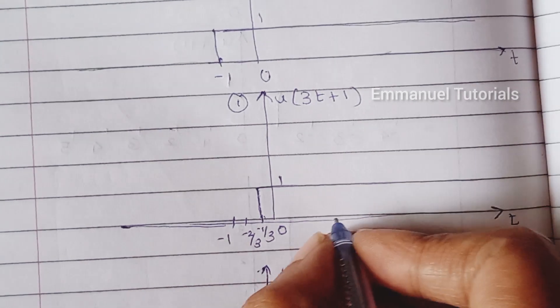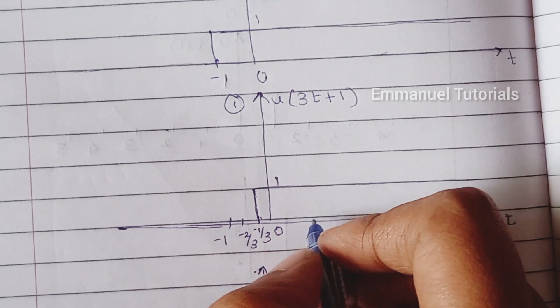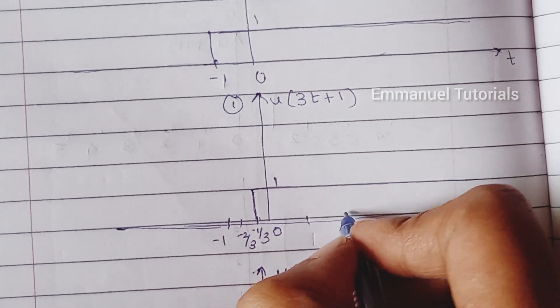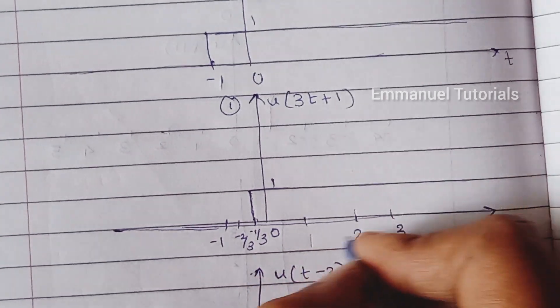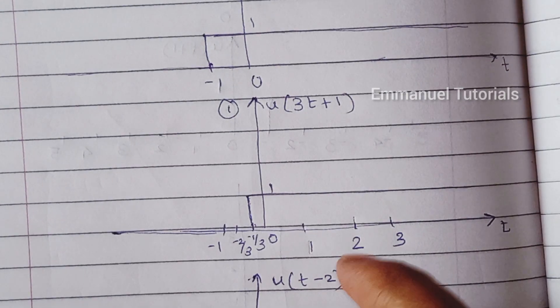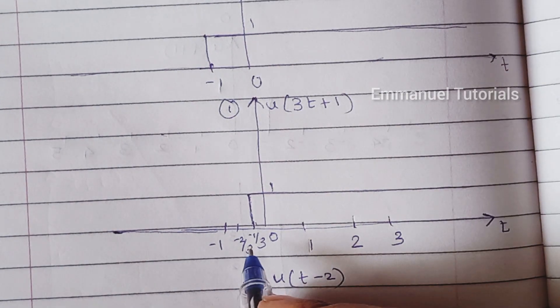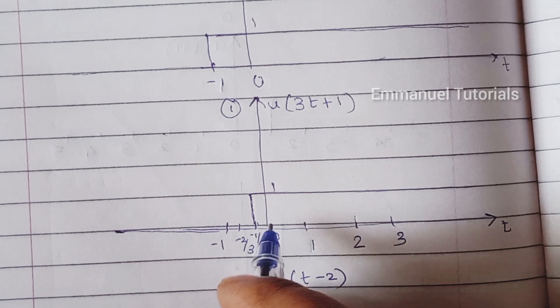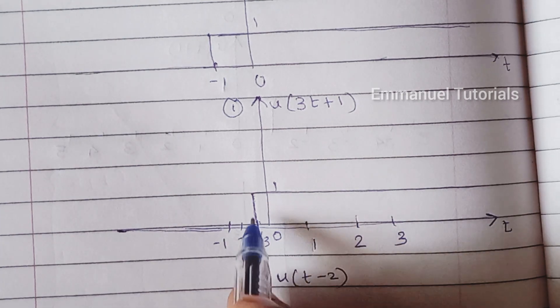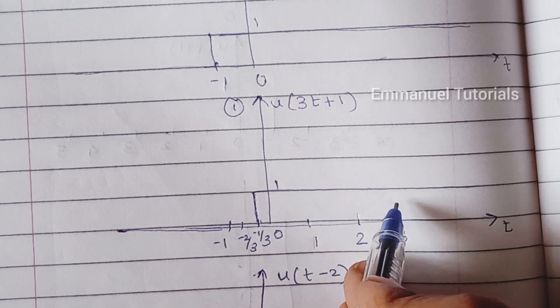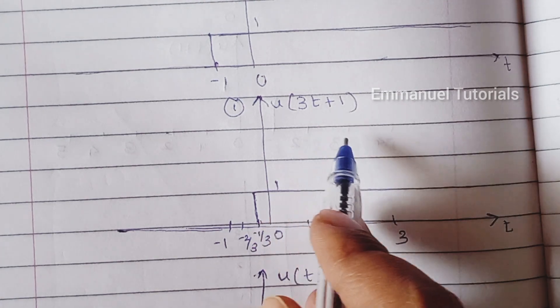On the right hand side you don't need to make much of a change so you can directly plot 1, 2, 3 and so on. On the left hand side it's important to plot because we have to show the starting point of the signal and the starting point is going to start at minus 1 by 3. So that is what I have written here and also drawn the signal starting from there. So this is our signal u of 3t plus 1.